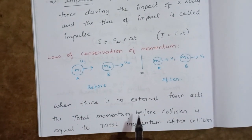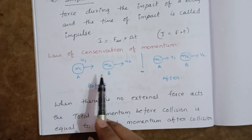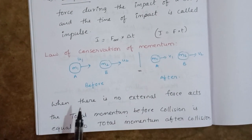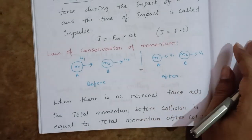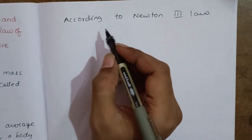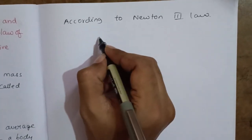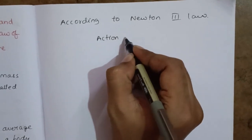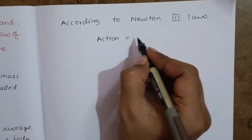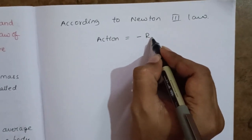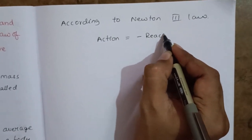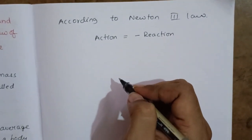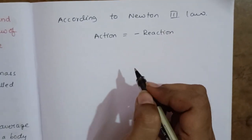The law of conservation of momentum says total momentum before collision equals total momentum after collision. According to Newton's third law, every action has an equal and opposite reaction.